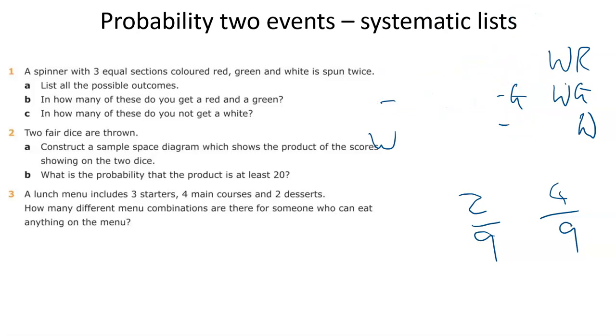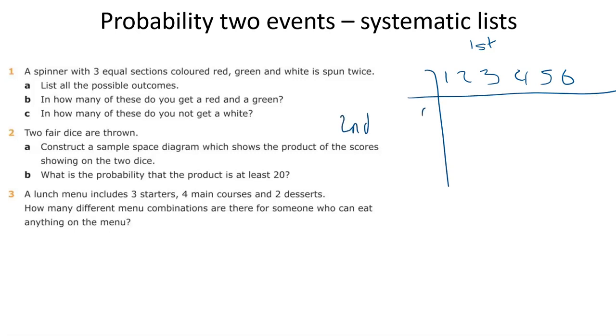Right. Let's have a look at question two, which I think specifies that we must draw a sample space diagram rather than the list this time. Two fair dice, construct a sample space diagram which shows the product of the scores on the two dice. So the first die could be one, two, three, four, five or six. The second die could be one, two, three, four, five or six. And because each of these six outcomes and these six outcomes are equally likely, we can just fill in the table and each of the numbers in the table are equally likely and we can add it up and do the probability. And because it just wants the product, we're just going to times it together to get what the results are.